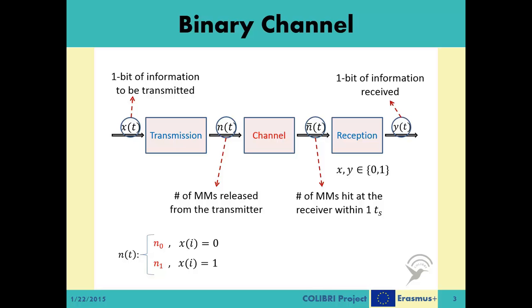These released molecules propagate in the channel and the receiver starts counting the number of messenger molecules hitting itself within the current symbol duration. If this value, the N̄t, is below a given threshold tau, the received information is translated as 0.